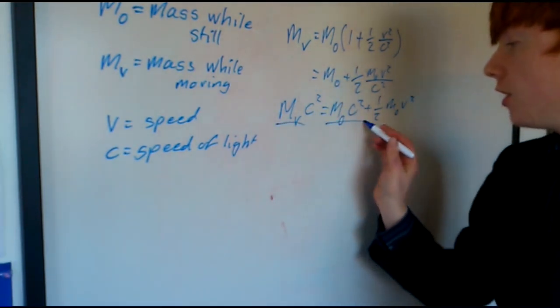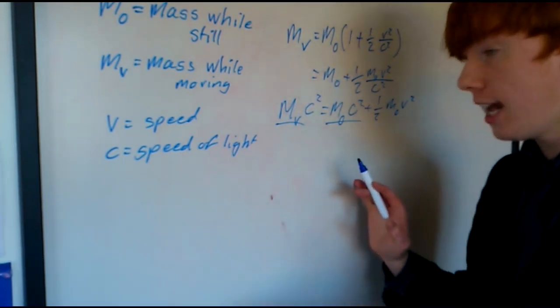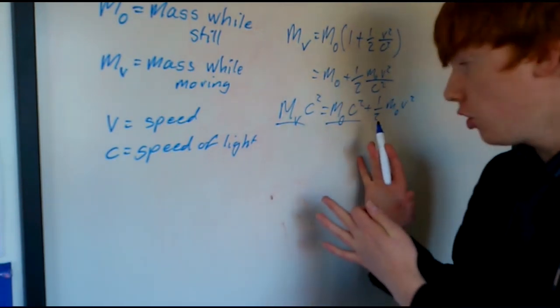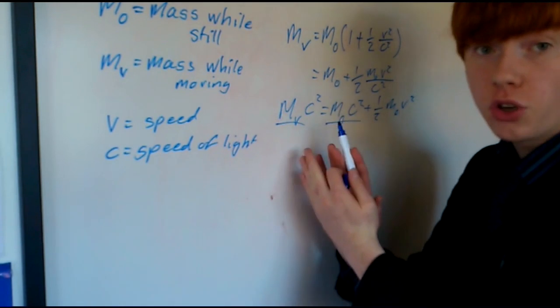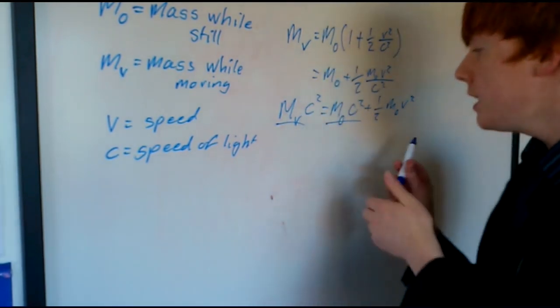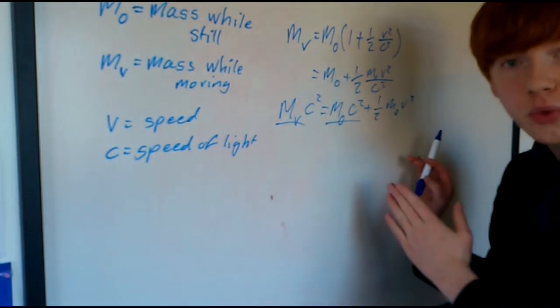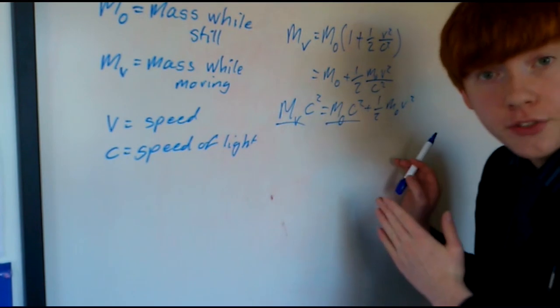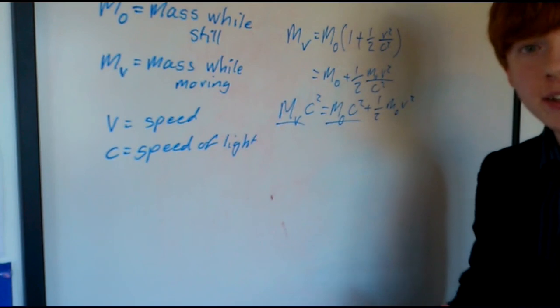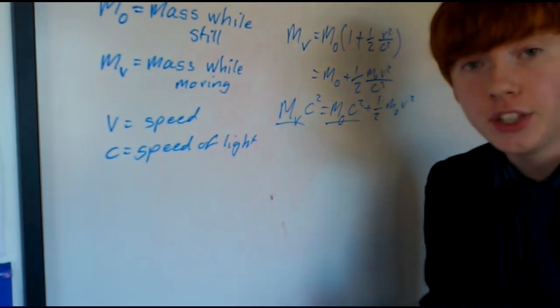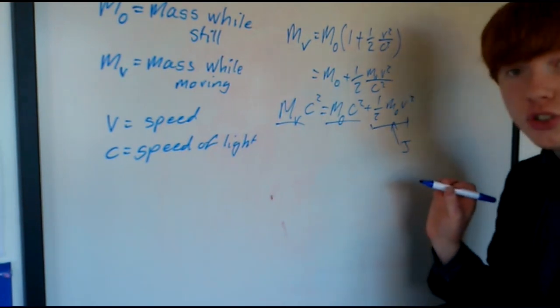And look at that, we already have two mc squareds, only they're talking about slightly different things. This one here is talking about mc squared while you're still, and this one here is talking about mc squared while you're moving. And the only difference between these two is this over here, half mv squared, which many of you will probably know is what is known as your kinetic energy, is the energy that you have so that you can move. And we know that this is a type of energy here, as this is measured in joules.